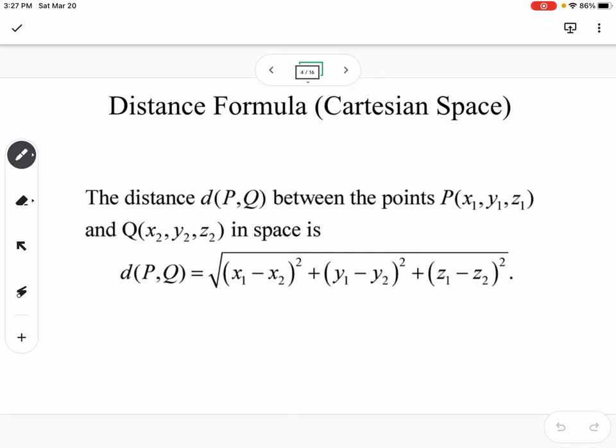So distance formula, this should be very familiar to distance formula in two dimensions. The only difference here is that we're adding the z coordinates, so we subtract, find the difference between the two z coordinates and square it. Otherwise it's the same as our two-dimensional distance formula.